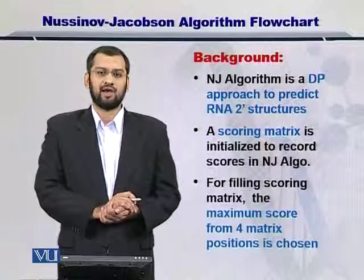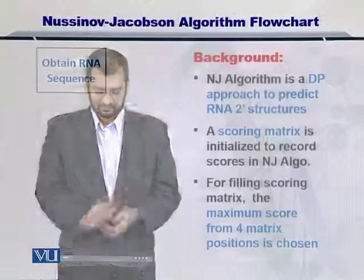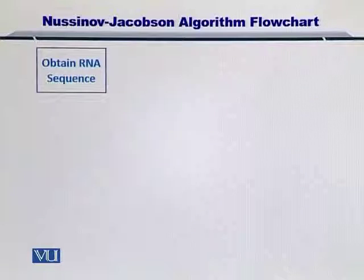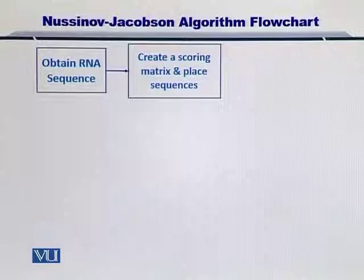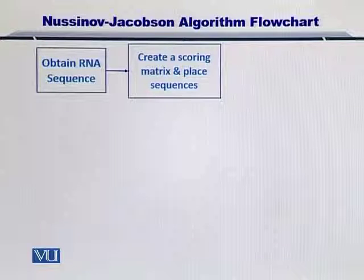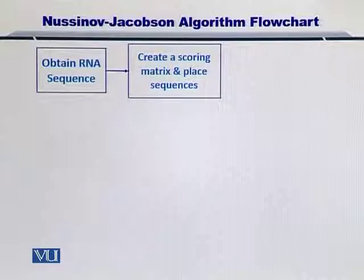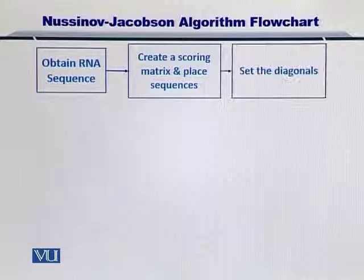Let's take a look at how this algorithm works. First, you have to obtain the RNA sequence that you will be predicting the secondary structure for. Once you have the sequence, you create a scoring matrix, which will be empty initially. Then you place the RNA sequence on top as well as on the left side of the matrix.